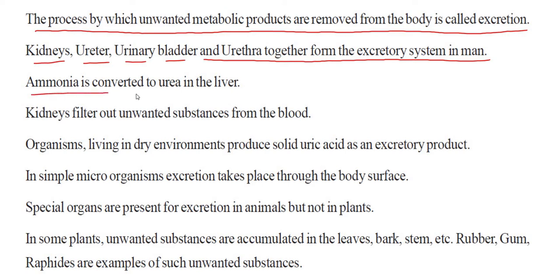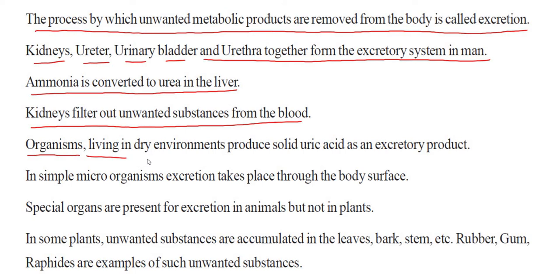Ammonia is converted to urea in the liver. The kidneys filter out unwanted substances from the blood. In organisms living in dry environments, the excretory product is solid uric acid.